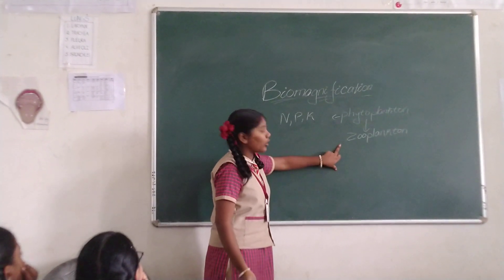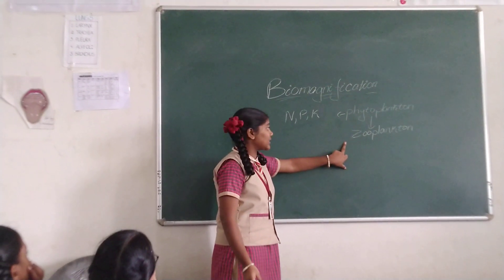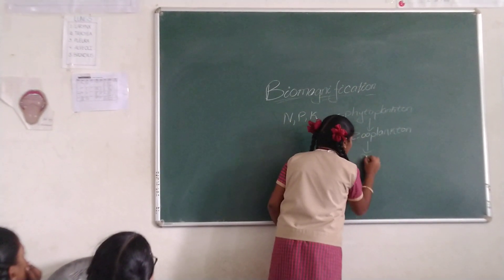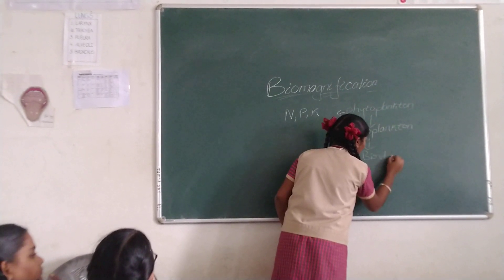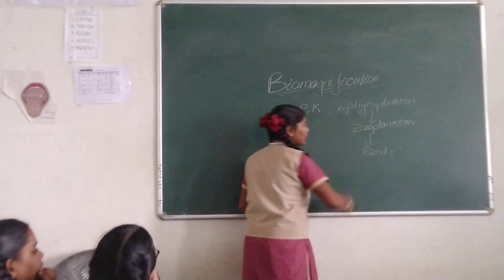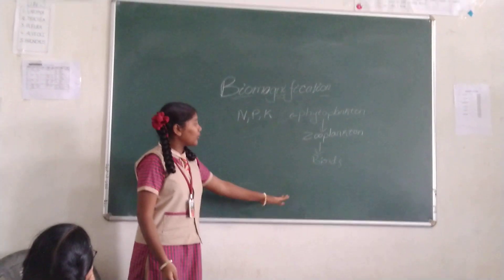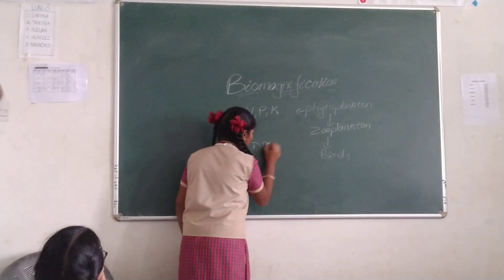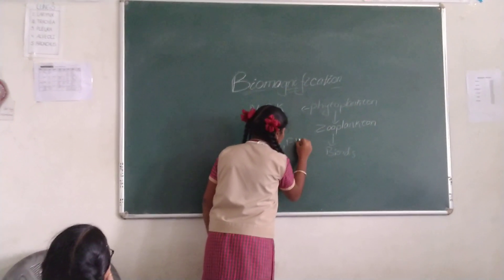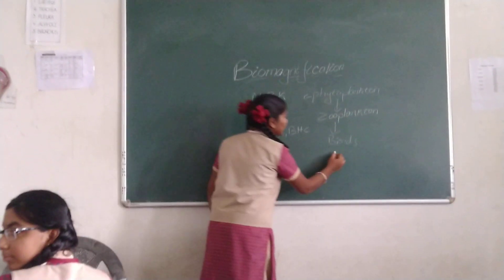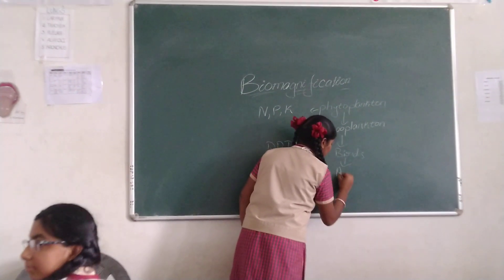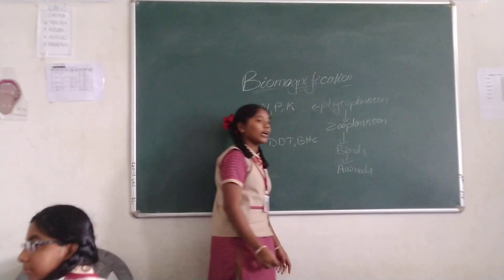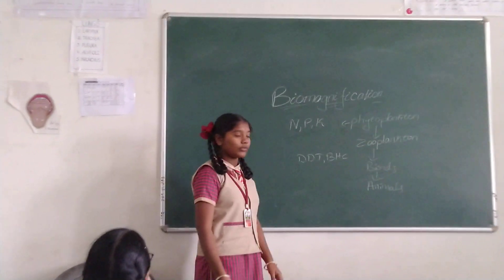The zooplankton also contains some pesticides like DDDB and BHD. The zooplankton is eaten by birds. The birds also contain some non-biodegradable pesticides like DDDB and BHD. The bird is again eaten by animals or human beings, which also contain very harmful pesticides.